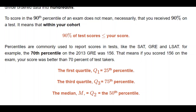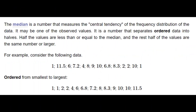A median is a number associated with the midpoint of the frequency distribution of the data in ordered form. We have to order the data from smallest to largest, and then the median could be one of the values if there are an odd number of values, or it may not appear in the data if there are an even number of values. Half of the data is less than or equal to the median, and the other half is greater than or equal to the median.